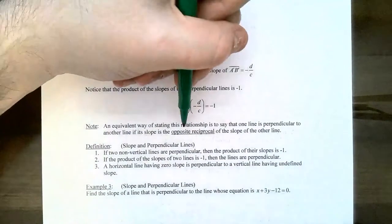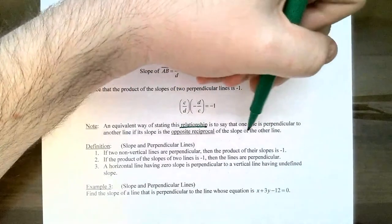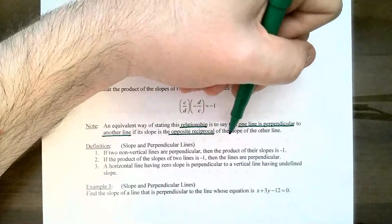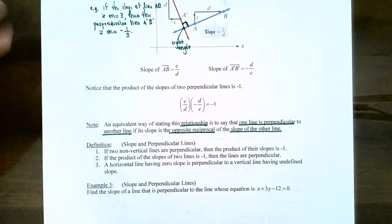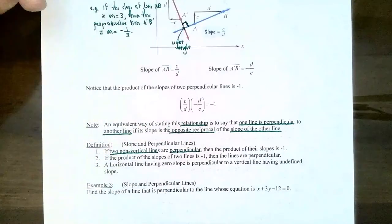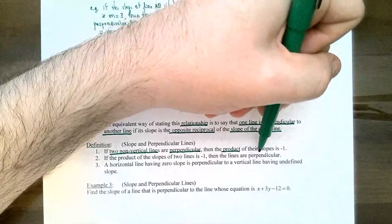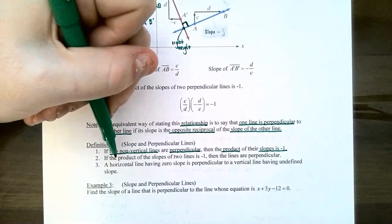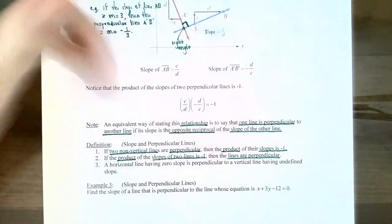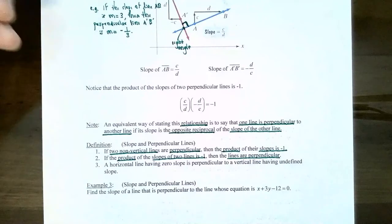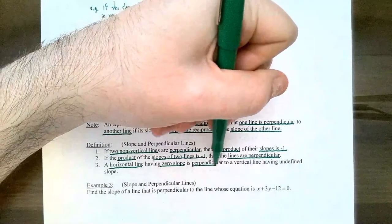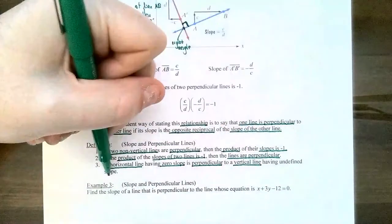The relationship between perpendicular lines is that the slopes are opposite reciprocals of one another. Two non-vertical lines are perpendicular if you multiply their slopes and get negative one, and vice versa. If a horizontal line has zero slope, a perpendicular line would be vertical with undefined slope.